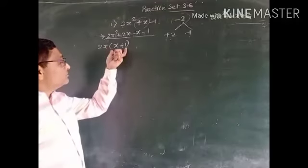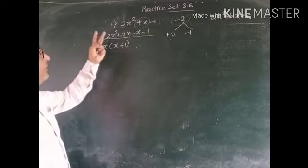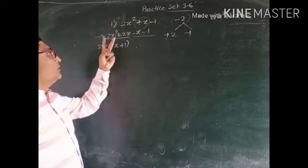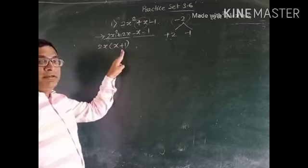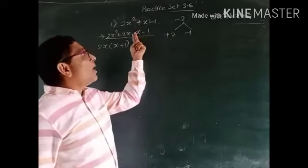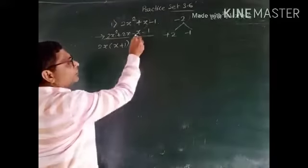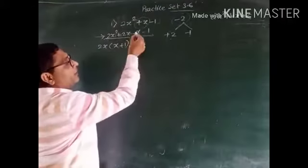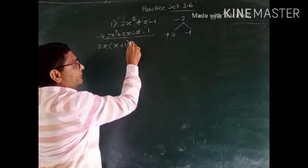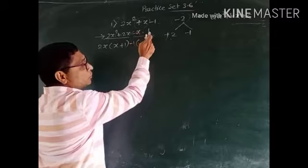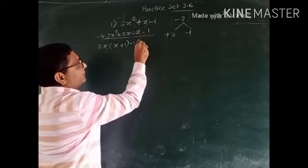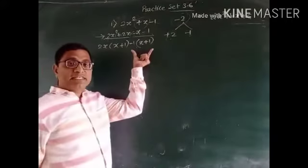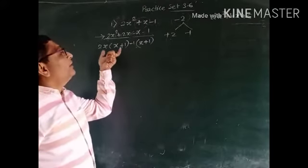In the first group, 2x is common, giving (x + 1) in the bracket. The common factor divides each term: 2x² divided by 2x gives x, and 2x divided by 2x gives 1. In the second group, -1 is common — nothing else is visible, but 1 is in both terms. This 1 will appear with its sign, so it is -1. Dividing both terms by -1 gives (x + 1). Since both groups give the same bracket (x + 1), we are going correctly.